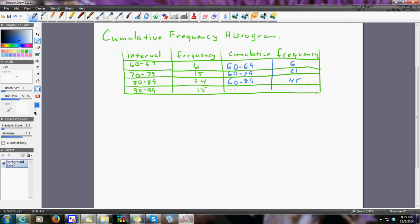Between 90 and 99, I had 15, but that means really between 60 and 99, I had 60. Now this one should always be your total, because it accumulates.